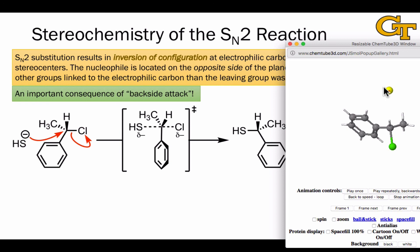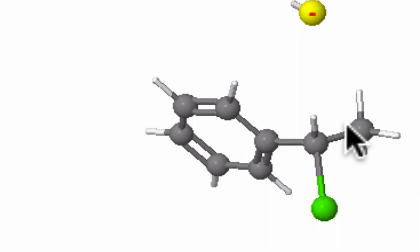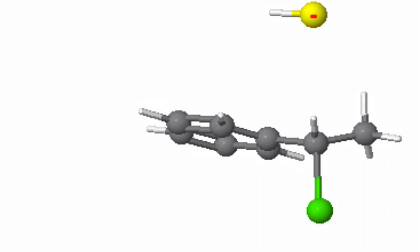And here's a three-dimensional image that shows the trajectory of the nucleophile, here SH- as it approaches the electrophile. Pay close attention to what happens to the hydrogen, methyl group, and phenyl ring as this step occurs. And notice where the sulfur ends up relative to where the chlorine was positioned originally.